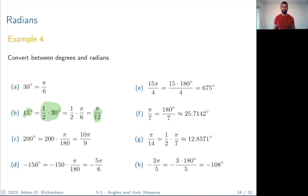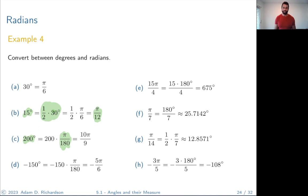Thirty degrees is π/6 — you should have that memorized. Fifteen degrees is half of 30 degrees, so it's half of π/6, which is π/12. You can use those scaling tricks to figure out non-standard angles.